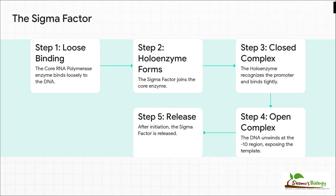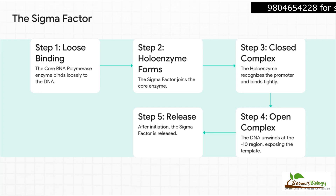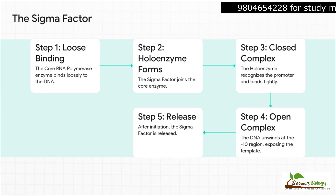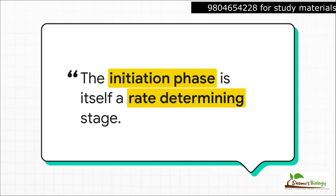Now here's the catch. The main workhorse, the core RNA polymerase enzyme, is powerful but it's also kind of blind — it can't find the promoter by itself. It needs a guide, and that guide is the sigma factor. When sigma joins the core, they form the holoenzyme, the complete mission-ready machine. The holoenzyme scans the DNA, recognizes the promoter, and locks on tight — that's called the closed complex. Then it unwinds the DNA at the negative 10 region to create the open complex. Once the first few bits of RNA are made, the sigma factor's job is done and it just pops off, letting the core enzyme get to work.